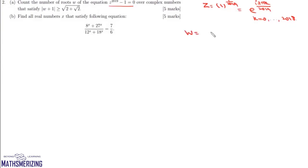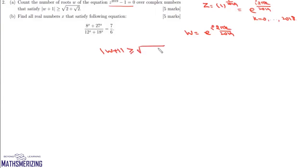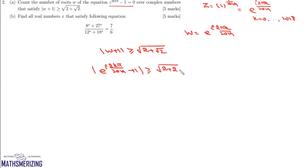Suppose we have w = e^(i·2πk/2019). The condition is |w+1| ≥ √(2+√2). We can write this as |e^(i·2kπ/2019) + 1|, and the right-hand side is √2 + √2, which we can write as 2 + 2cos(π/4), taking the square root.